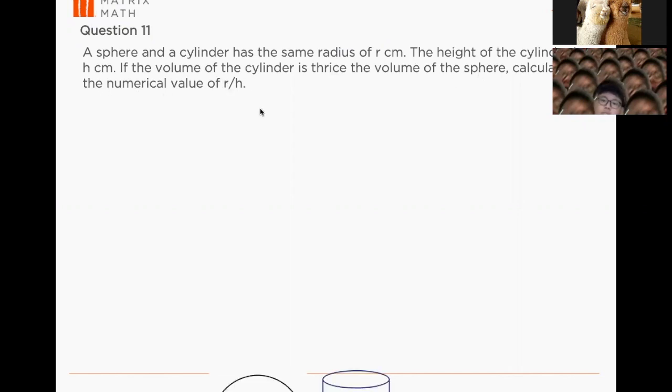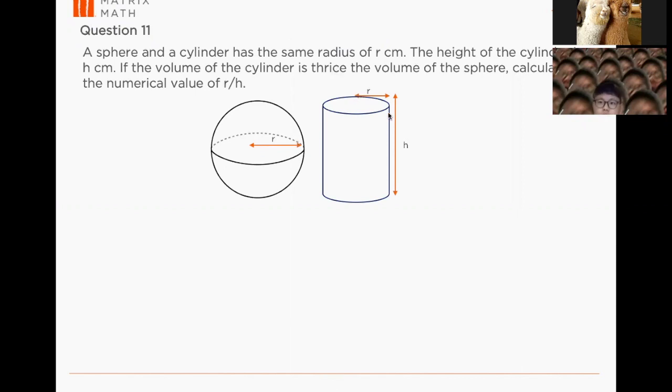So this is a sphere and this is a cylinder. The only thing that both of them have the same is the radius. The height of the cylinder is h, so it's given here. So how to approach this question?